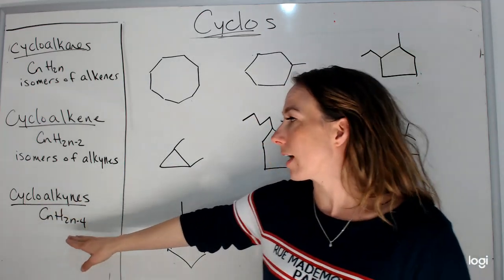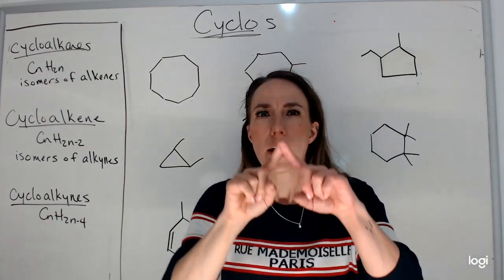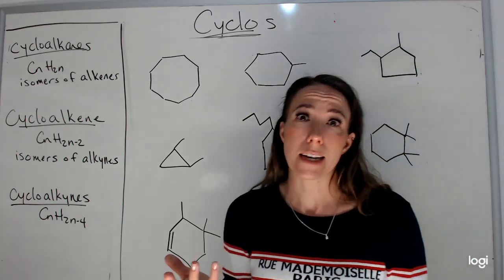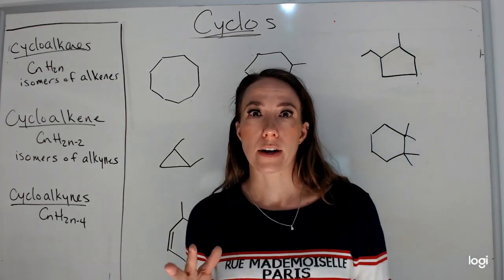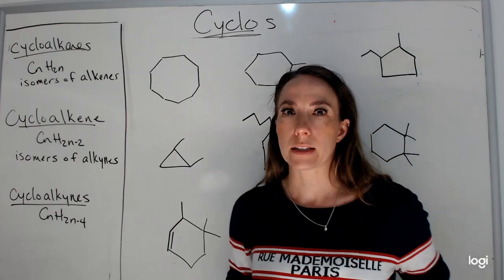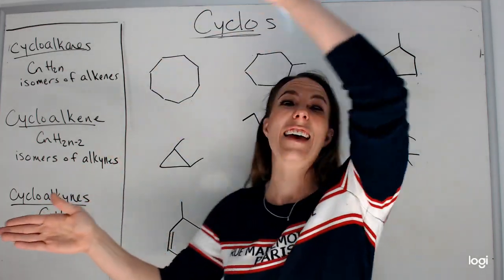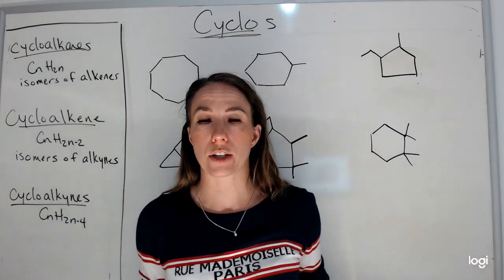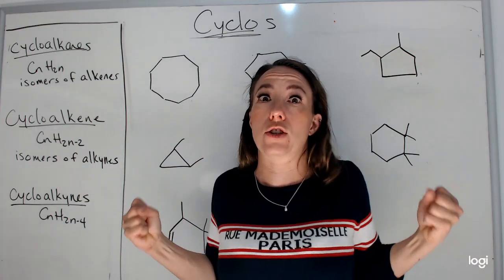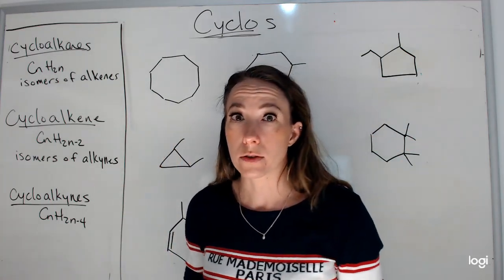Cycloalkynes have a general formula of CnH2n-4. They are a circle with a triple bond in them. They're really unstable in real life and not very likely to be found, simply because if a carbon is trying to get all three bonds in one direction and then another bond in another direction, it's called ring strain — the orbitals are just too far away to overlap.